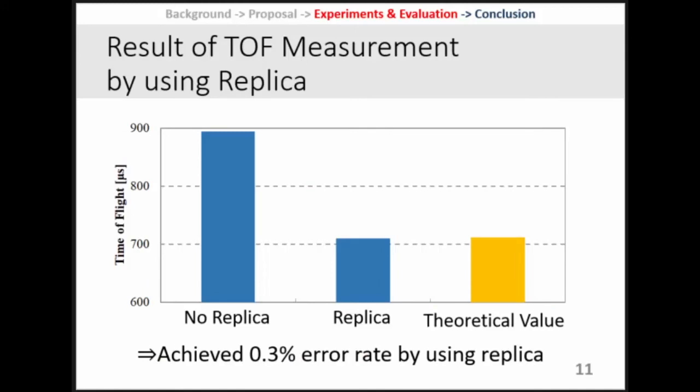The first proposal is about cross-correlation technique with replica signal. In this experiment, we evaluate the proposal by comparing the theoretical value with the measured TOF using the transmitted waveform and the waveform replica. This figure shows that the TOF measurement using the replica signal significantly reduced the error from 25.5 percent to 0.3 percent.